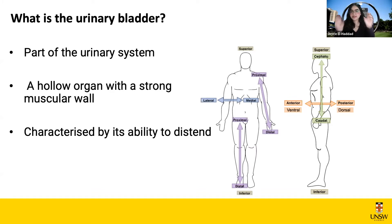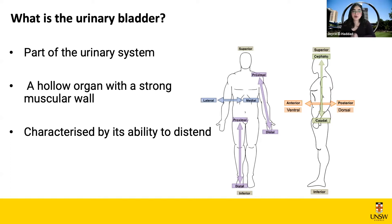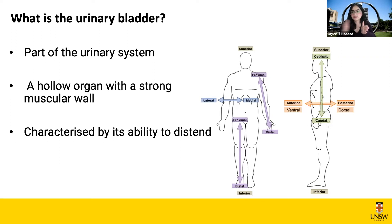Then we have the ureters — little tubes through which urine flows — and the ureters connect to the urinary bladder. We also have an extension of the urinary bladder called the urethra, which provides a passageway for urine to void into the external environment — hopefully a toilet. The urinary bladder is a hollow organ with a strong muscular wall, characterized by its ability to distend. Because its main function is to store urine, it needs to stretch and accommodate change. This is a very common theme in anatomy: structure will always reflect function.